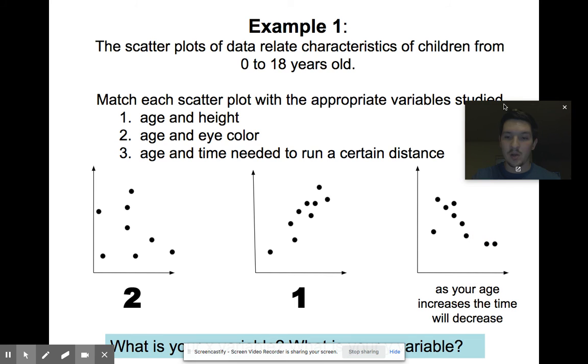And then this last one here, right? As your age increases, the time will decrease. As you get older, the longer it takes you to run a distance. So that's going to be a negative correlation. And that's that one. And then I'm hoping you can also figure out the variables of your x and y axis as well.